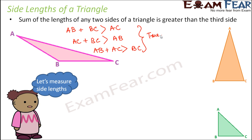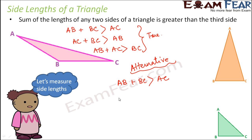There is also an alternative way of expressing the same relation. We said that A B plus B C is greater than A C. The alternative way of expressing this is: A B is greater than A C minus B C. In other words, any particular side is always greater than the difference between the other two sides.